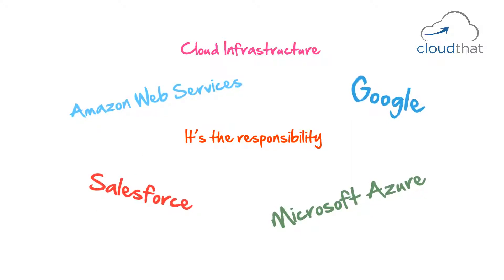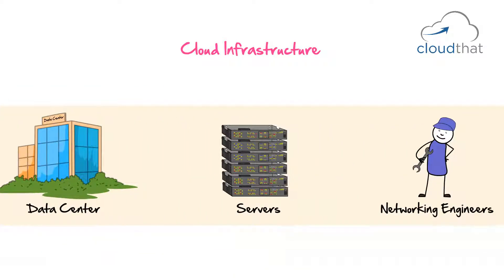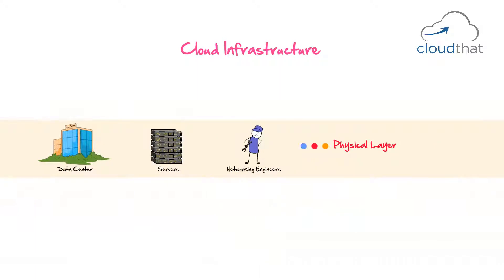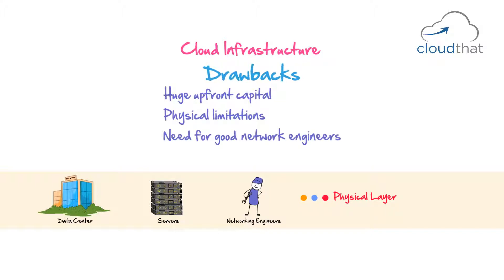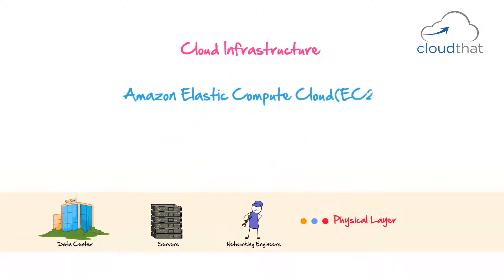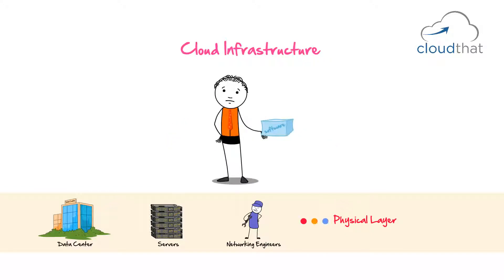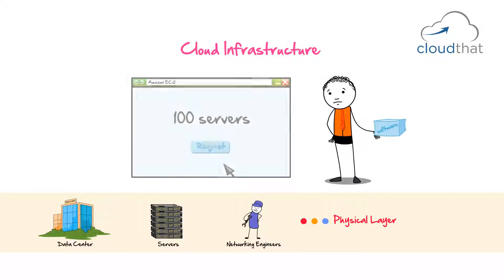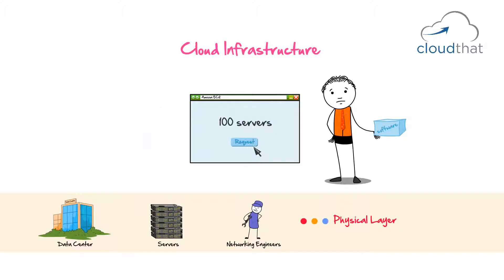In the previous video we saw the physical layer consisted of data centers, servers, and networking equipment, and the drawbacks faced were huge upfront capital, physical limitations, and the need for good network engineers. The entire physical layer is replaced by cloud services like Amazon Elastic Compute Cloud, Google Compute Engine, Microsoft Azure virtual servers, and many more. So instead of buying all the servers yourself, you go to Amazon EC2 and with a few clicks or an API call you can request hundreds of servers provisioned for you.